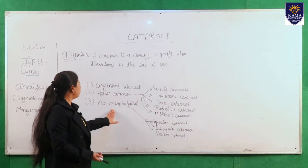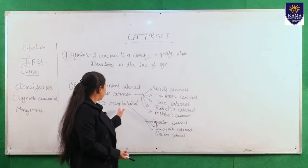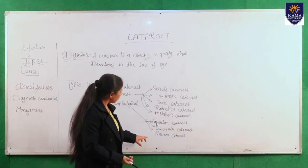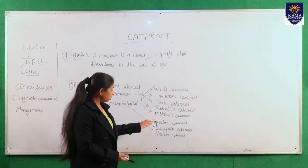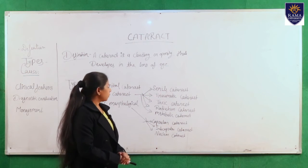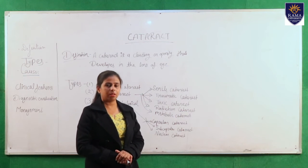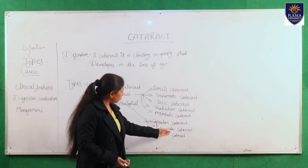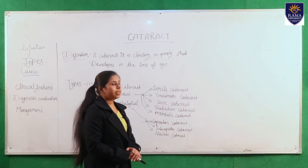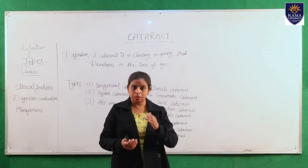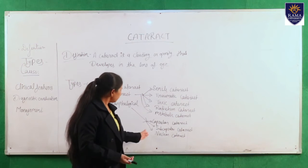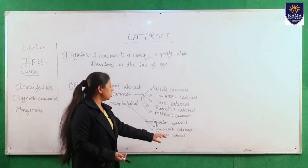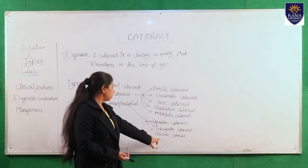Next is morphological cataract, which is divided into three types: capsular cataract, subcapsular cataract, and nuclear cataract. In capsular cataract, it involves the capsule. In nuclear cataract, it involves the nucleus of the crystalline lens.